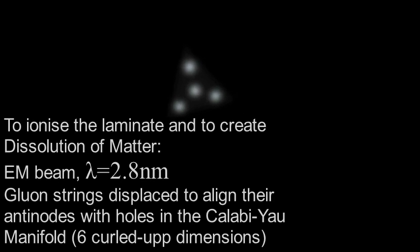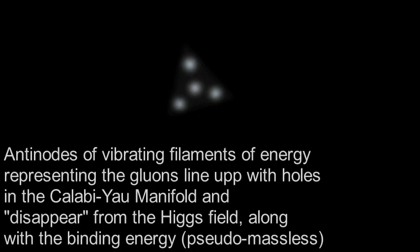you line them up with holes in what we call a Calabi-Yau space, Calabi-Yau manifold, which is basically six curled up dimensions with holes in it. Now, if you line up the antinodes of the strings with the holes, it looks as if the strings have disappeared down the holes and they become invisible to the Higgs field.